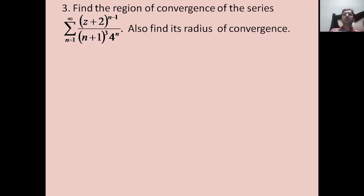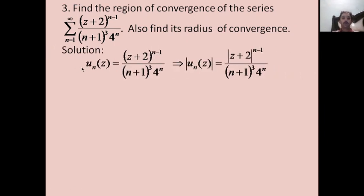Another example: find the region of convergence of the series sigma (z+2)^{n-1} / [(n+1)³ · 4^n] and also find its radius of convergence. Here u_n(z) = (z+2)^{n-1} / [(n+1)³ · 4^n], so |u_n(z)| = |z+2|^{n-1} / [(n+1)³ · 4^n].